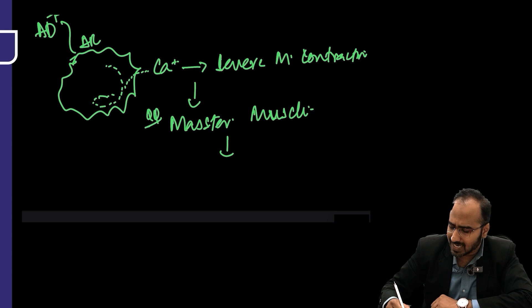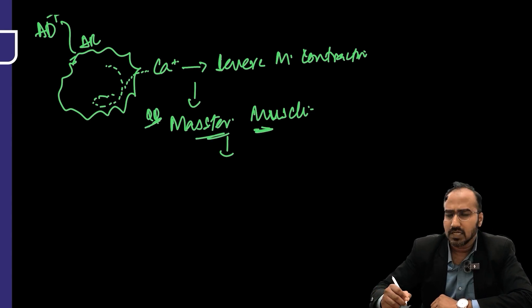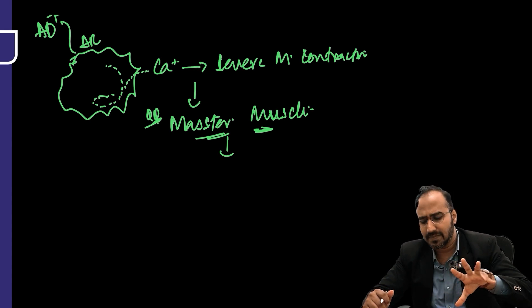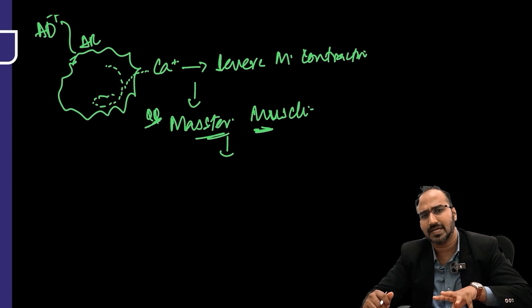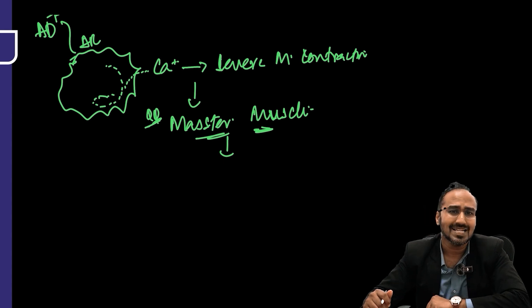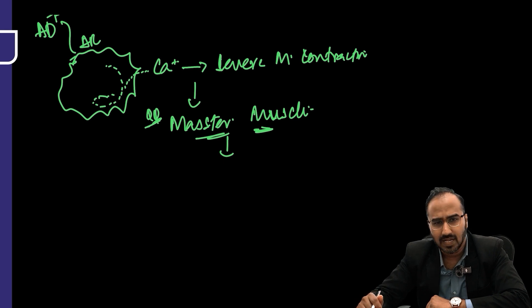The first muscle to contract in malignant hyperthermia is the masseter muscle. Suxamethonium stimulates the abnormal ryanodine receptor in autosomal dominant patients to release calcium, leading to sustained muscle contraction starting in the masseter muscle, then involving the whole body.